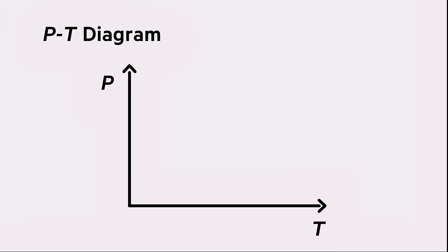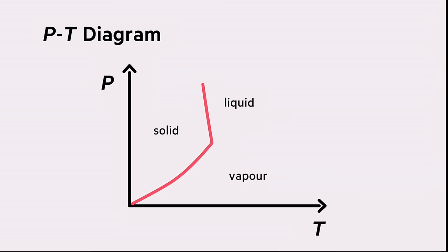The three phases are separated from each other by so-called separation lines. There is a melting line between the solid and the liquid phase, the sublimation line between the solid and the gaseous phase, and the vaporization line between the liquid and the gaseous phase.